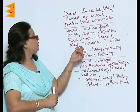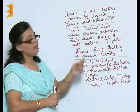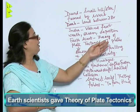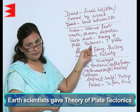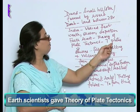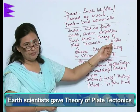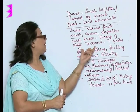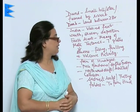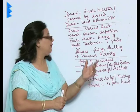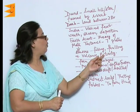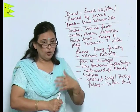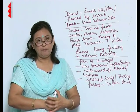Earth scientists put forward the theory of plate tectonics. There are seven plates, and according to this theory, when stresses were applied on the plate tectonics, that led to folding and faulting and volcanic activity. This was the theory put forward by earth scientists.